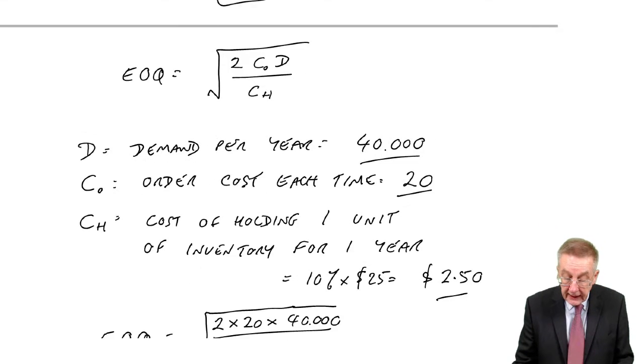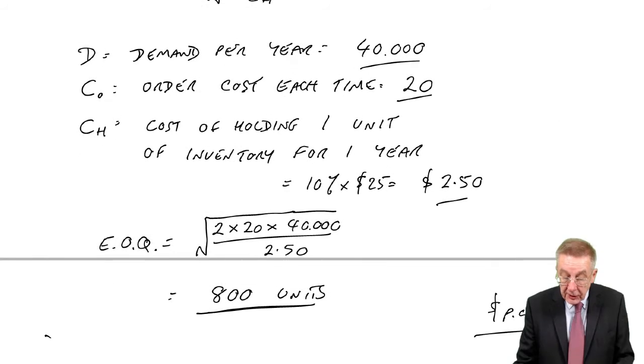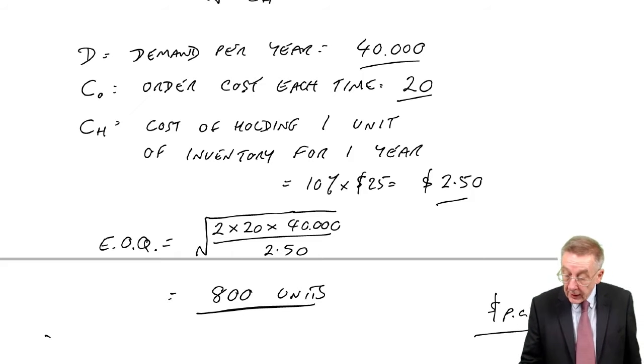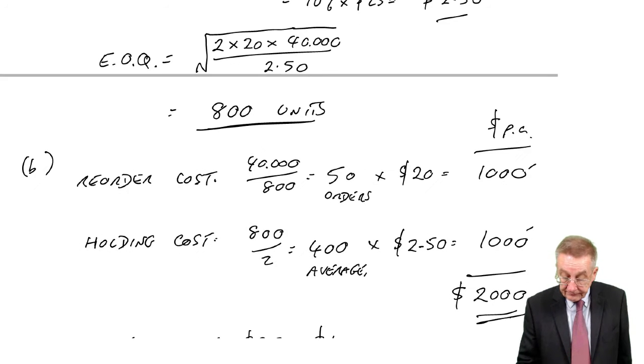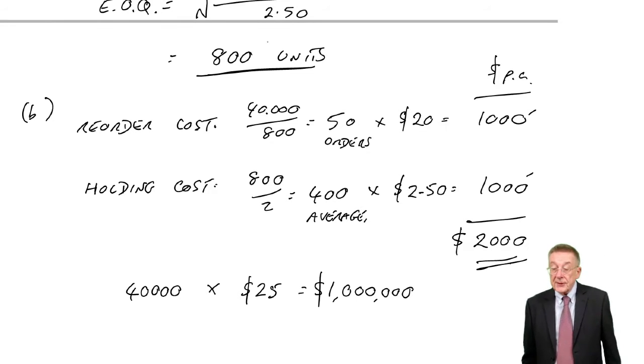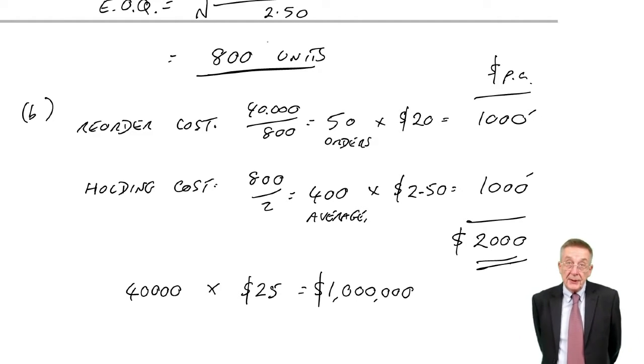In the first lecture, we looked at the economic order quantity, which was simply putting figures in the formula that's given in the exam. For example, we found the economic order quantity was 800. Make sure you can show the costings if required: the reorder cost, the holding cost, the total inventory cost of $2,000. That was the minimum.